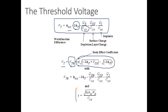In some cases we need a potential applied to the body, and then the threshold voltage is modified — it is added with a determined expression. Gamma is a fabrication parameter decided during device fabrication. Phi_F is also fixed. The only thing a designer can change is the voltage between source and body VSB, which allows changing the threshold voltage after the device is fabricated.